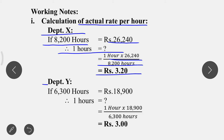For Department Y: if 6,300 hours worth total wages is Rs. 18,900, then for 1 hour it will be: 1 hour × Rs. 18,900 ÷ 6,300 hours. It is Rs. 3 per hour.